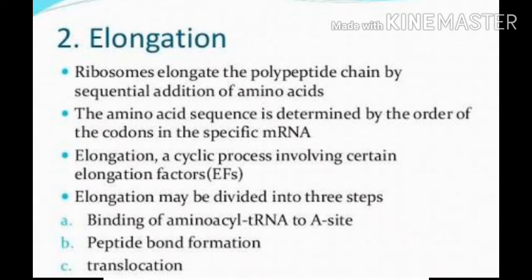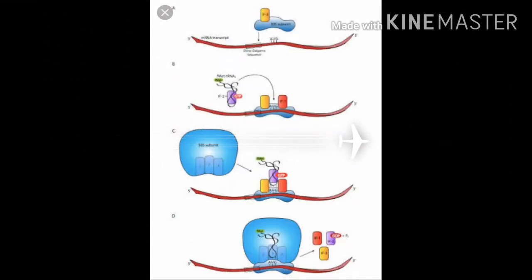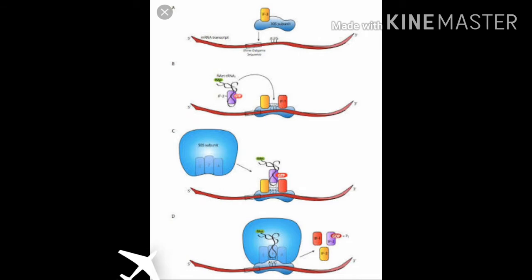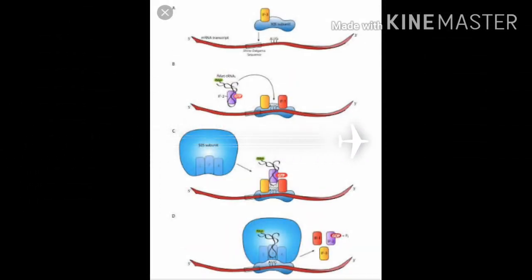The second step is elongation of the polypeptide chain. Another charged aminoacyl-tRNA complex binds to the A-site of the ribosome. A peptide bond is formed between the carboxyl group (COOH) of the amino acid at the P-site and the amino group (NH2) of the amino acid at the A-site, with the help of the enzyme peptidyl transferase. The ribosome then moves from codon to codon along the mRNA in the 5' to 3' direction, and the polypeptide chain elongates.